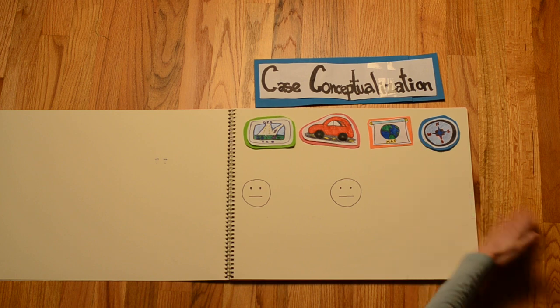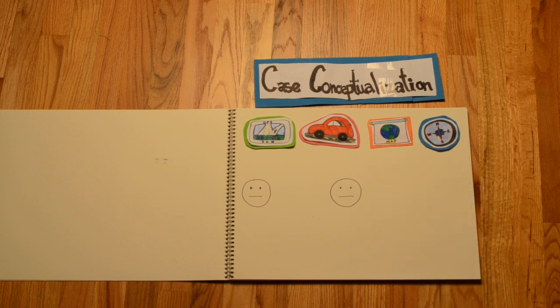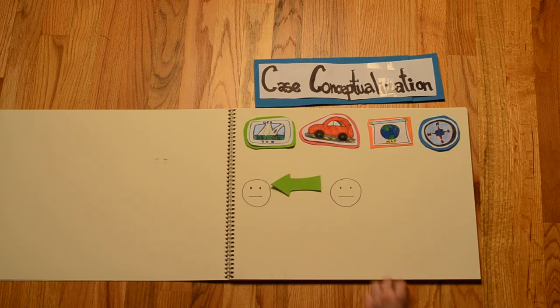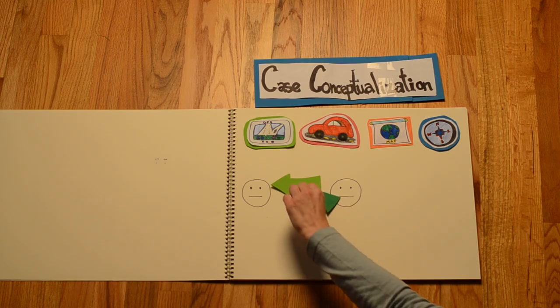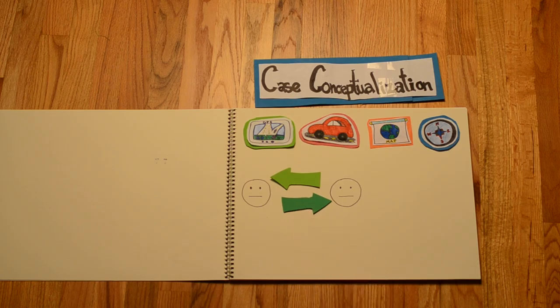It's almost like calibrating our internal compass so that it mirrors our client's internal compass. This allows us to view situations and experiences in a brand new way, and it helps us to understand another person's perspective in a way that perhaps we couldn't understand before.